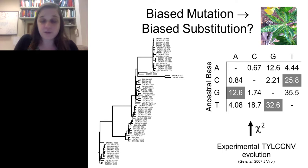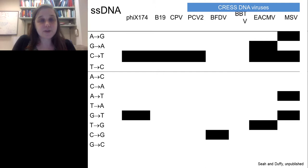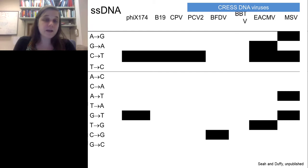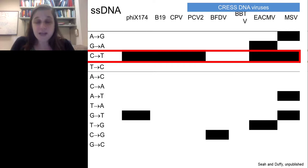Here I'm showing over-represented substitutions for a range of ssDNA viruses: phiX174 bacteriophage, B19 and canine parvovirus (two linear ssDNA viruses), and CRESS DNA viruses including porcine circovirus 2, beak and feather disease virus, banana bunchy top nanovirus, East African cassava mosaic virus, and maize streak virus. The first four rows are transitions; the bottom eight are transversions. The most universal substitution seen across ssDNA viruses is C-to-T — potentially due to enzymatic deamination.